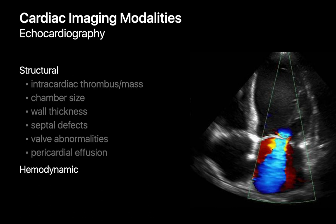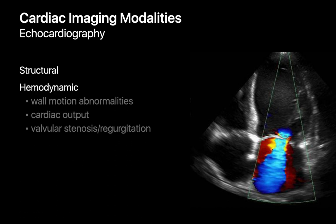Cardiac echo can provide us with structural information about the heart — things like identifying if there's a mass or thrombus in a cardiac chamber, the size and wall thickness of cardiac chambers, septal defects, valve disorders, and pericardial effusions. Cardiac echo can also provide us with hemodynamic information, such as identifying cardiac wall motion abnormalities, cardiac output, and identifying and quantifying cardiac valvular disorders.